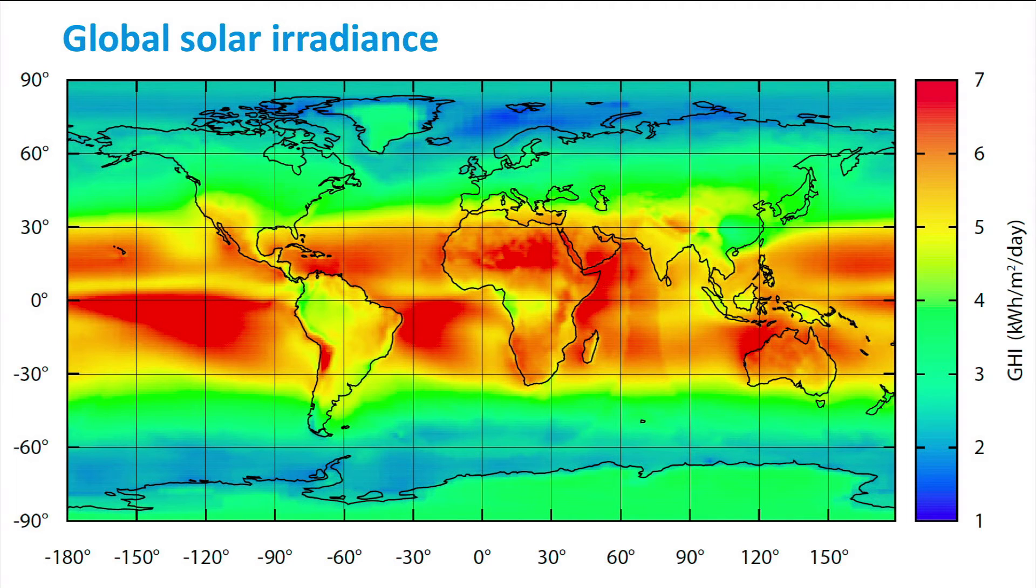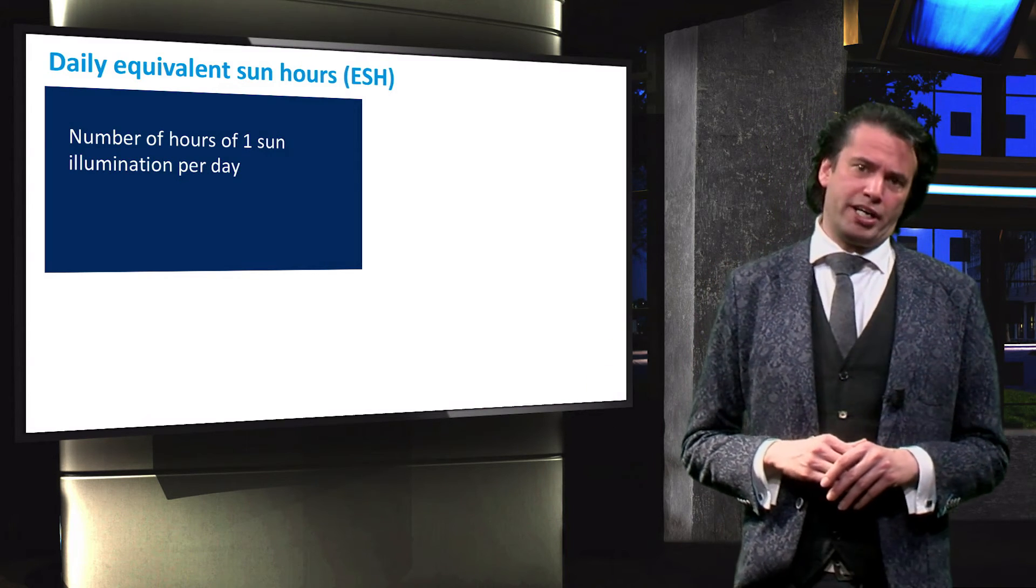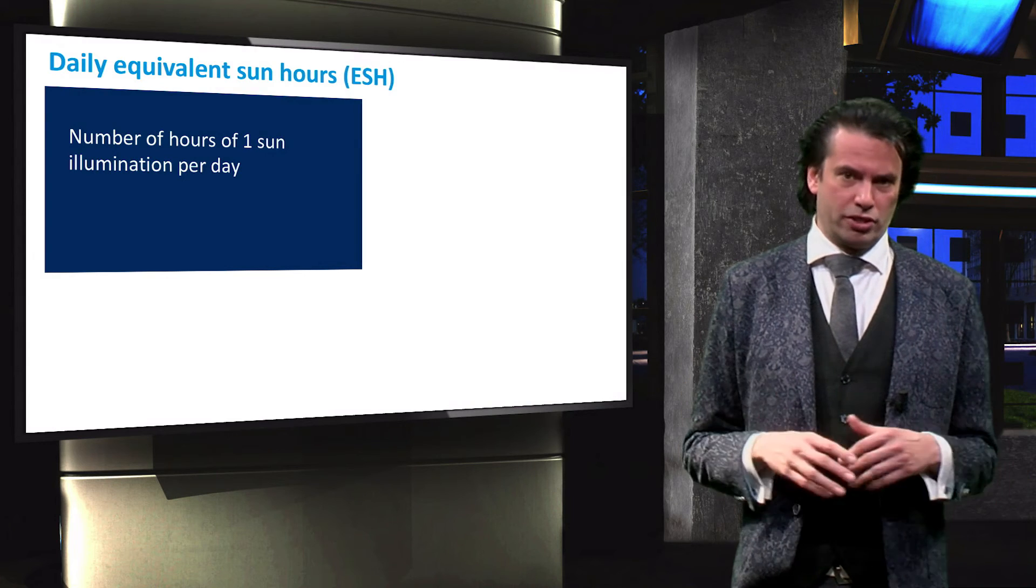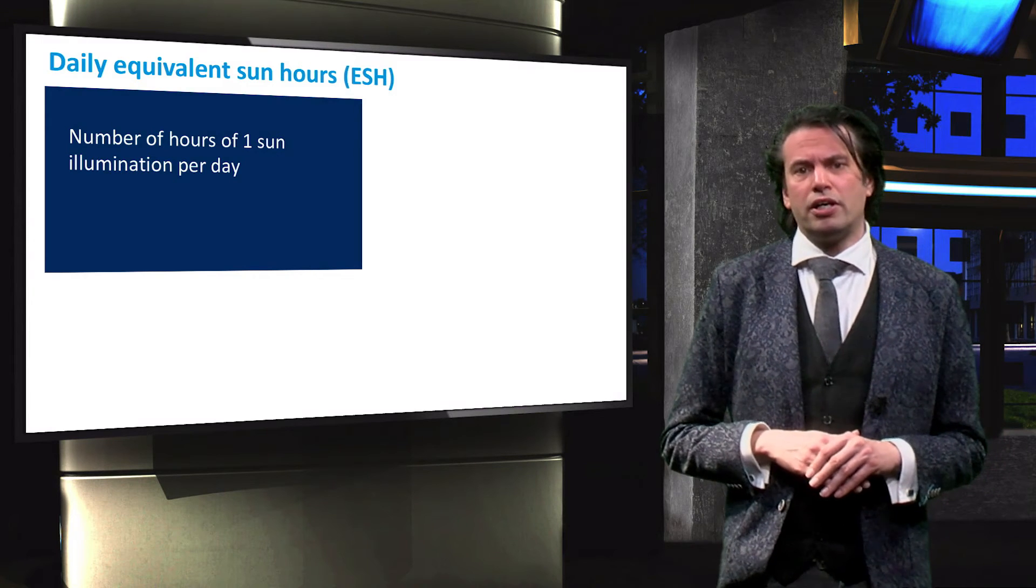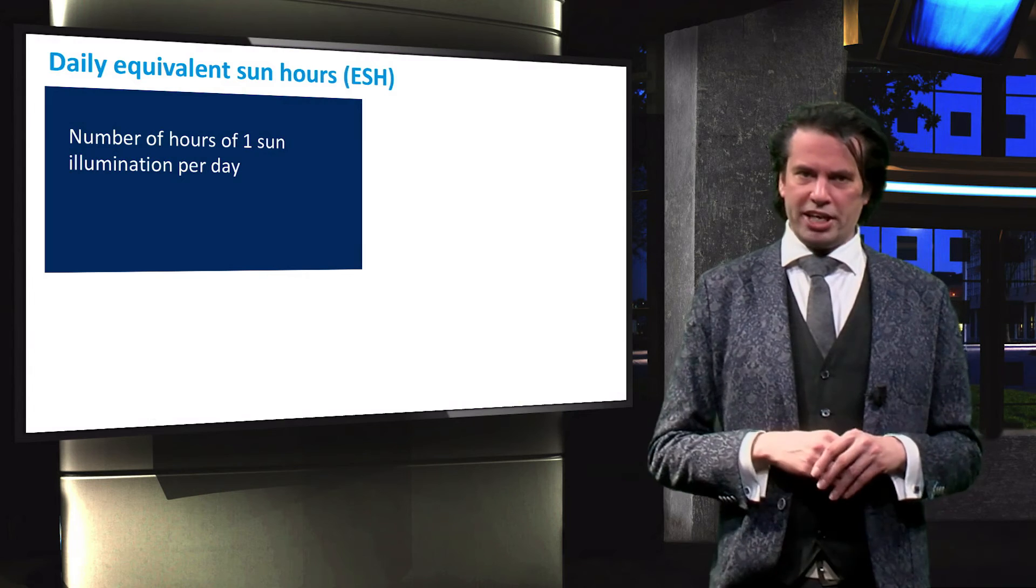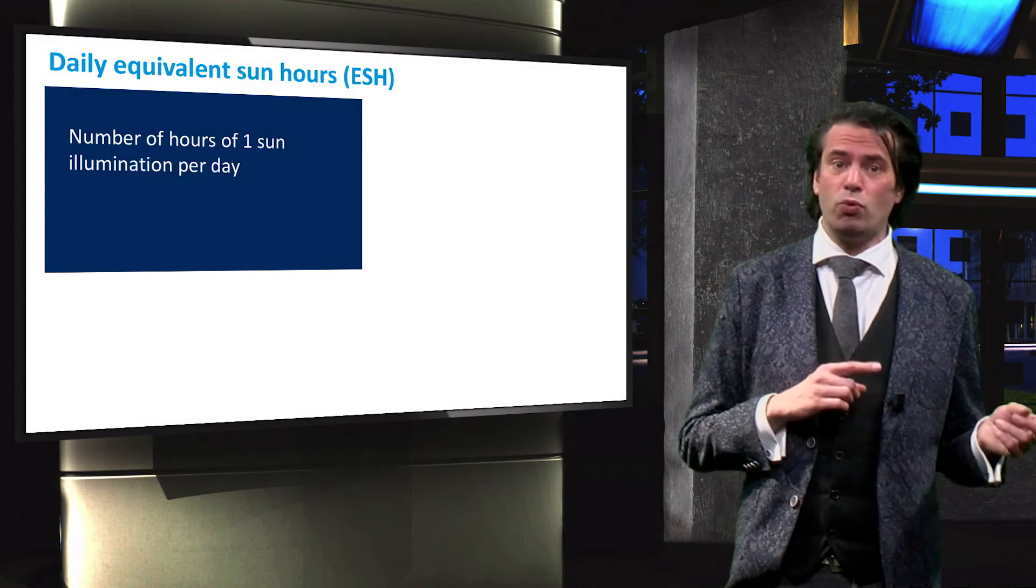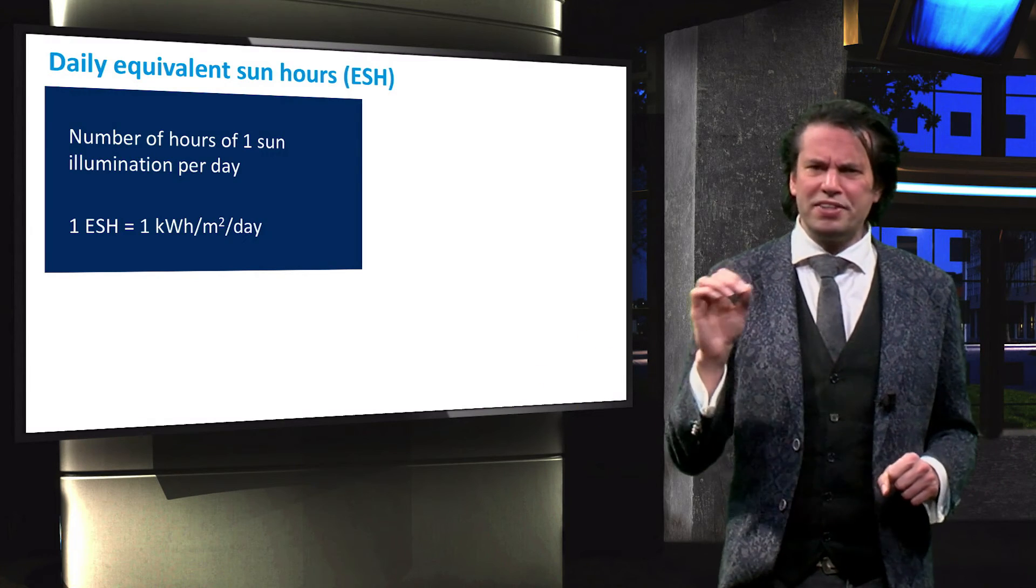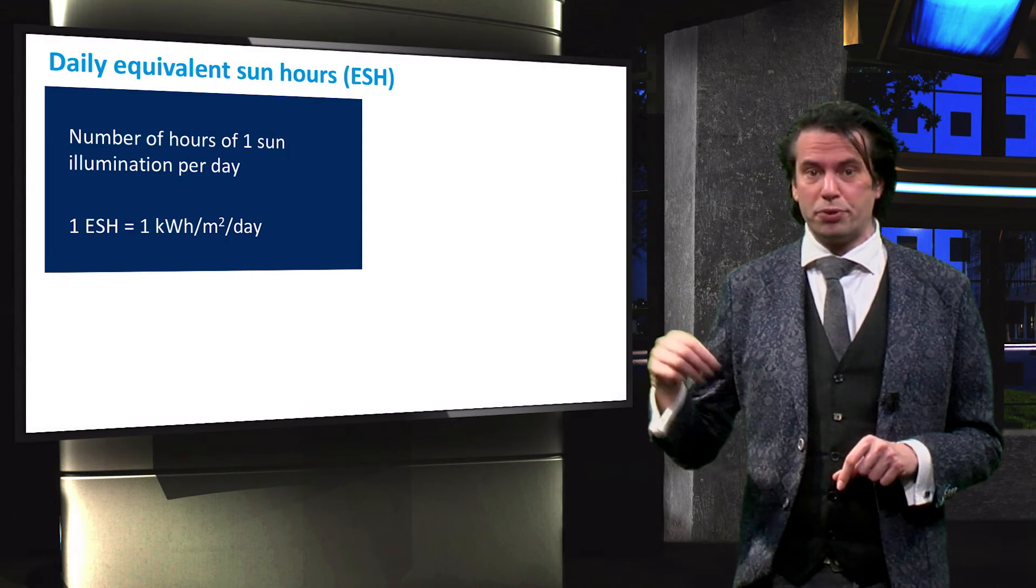A more convenient way to express the irradiance per day are the daily equivalent sun hours, or ESH. An equivalent sun hour is defined as the number of hours of one sun illumination per day. Since one sun illumination is equal to 1 kilowatt per square meter, one daily equivalent sun hour is equal to 1 kilowatt-hour per square meter per day.